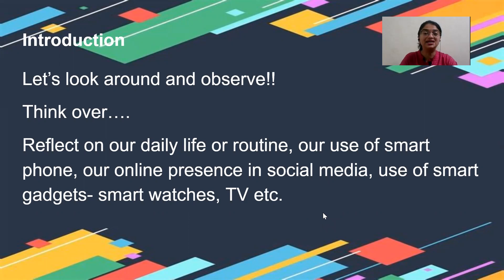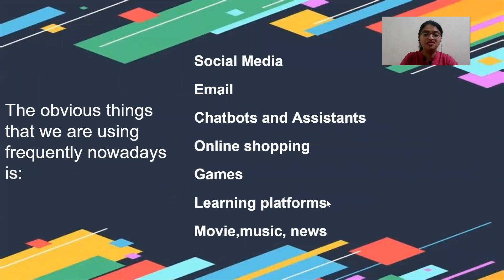This chapter is called the Relate Module, or AI in daily life. The obvious things we are using frequently nowadays are social media, email, chatbots and assistants, online shopping, games, learning platforms, movies, music, and news. In all these things I have mentioned, everywhere AI is there. We are using it regularly — sometimes we know, but sometimes we do not know.